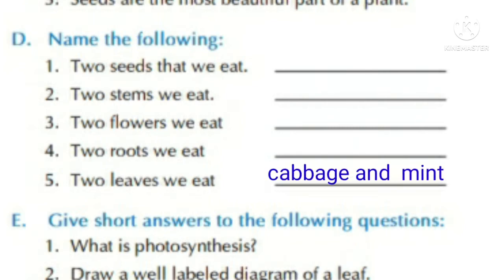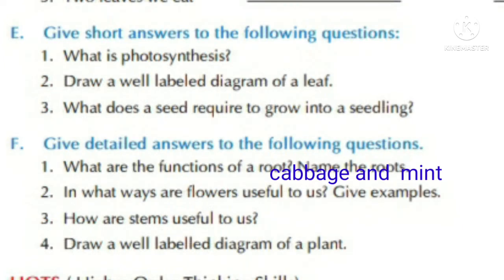Number four: two roots we eat — carrot and radish. Number five: two leaves we eat — cabbage and mint.